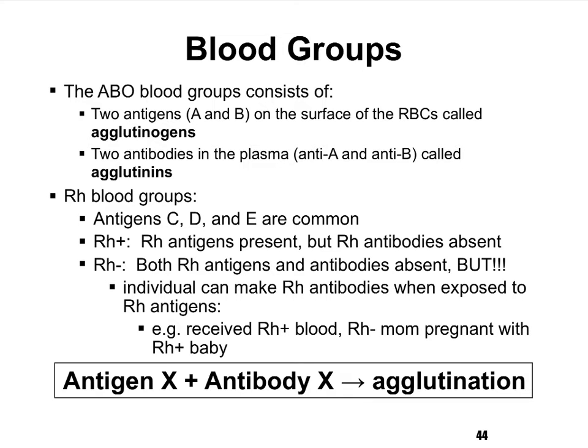How does one determine whether a patient is blood type A, B, AB, or O? That all has to do with what antigens are present or not present on the red blood cells. If a person has antigens A attached to his or her red blood cells, that person is blood type A. If antigens B are attached, the person is blood type B. If both are attached, the person is blood type AB. And if neither antigen A nor antigen B are attached, we're dealing with blood type O.